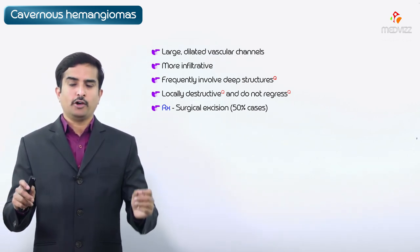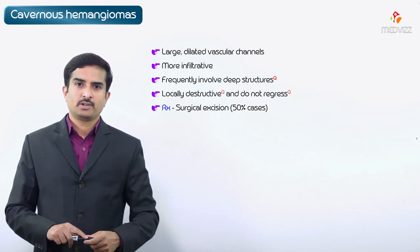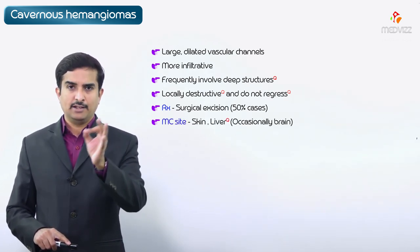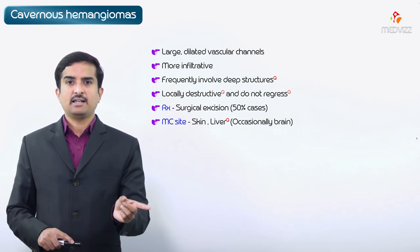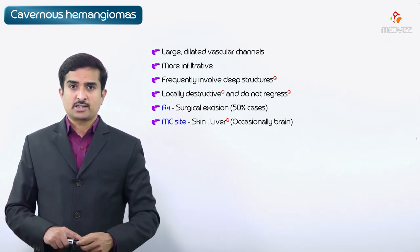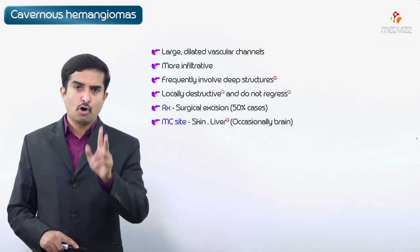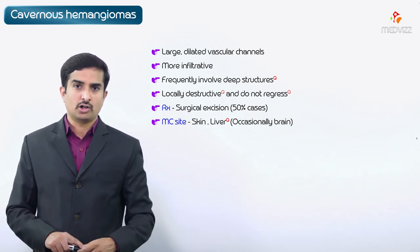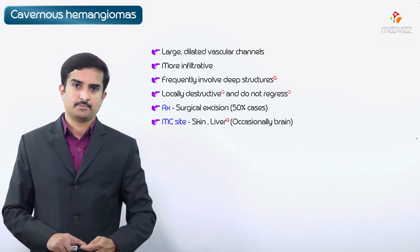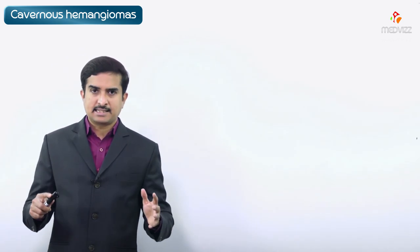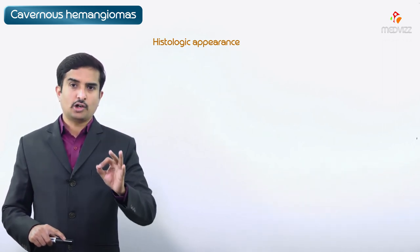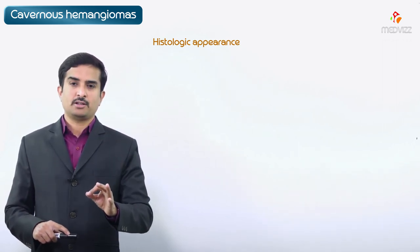From an examination point of view, the most common organs involved are skin and liver, both with equal predominance. Occasionally, the brain can also be involved.